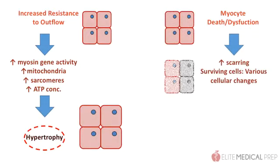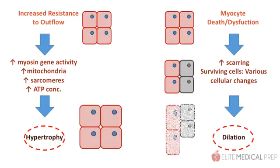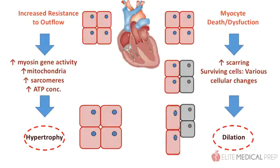For comparison, it is instructive to look at how this differs from the response in dilated cardiomyopathy. In this case, a myriad of insults can occur to the myocytes, causing their death or dysfunction. The heart responds with scarring and other cellular changes, and the viable cardiac myocytes lengthen in order to increase the volume of the left ventricle. Basically, since the heart can't pump as efficiently as before, it compensates by trying to work at a higher volume per heartbeat.